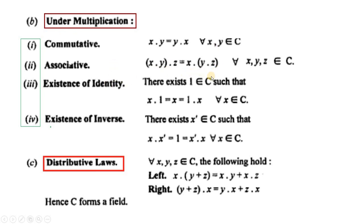Multiplicative identity: set C میں 1 ہے یعنی 1 + 0·i; this 1 is the multiplicative identity in set C. اگر set C سے کوئی complex number لیں اور اس کے ساتھ 1 کو multiply کریں تو واپس x ملتا ہے — یعنی set C میں multiplicative identity element exist کرتا ہے۔